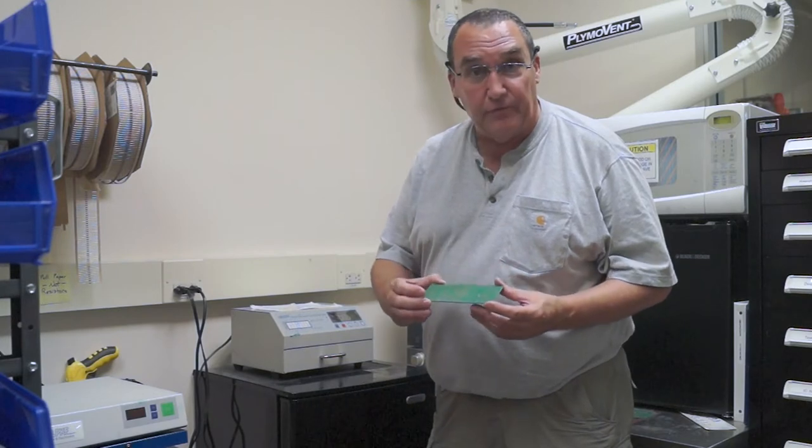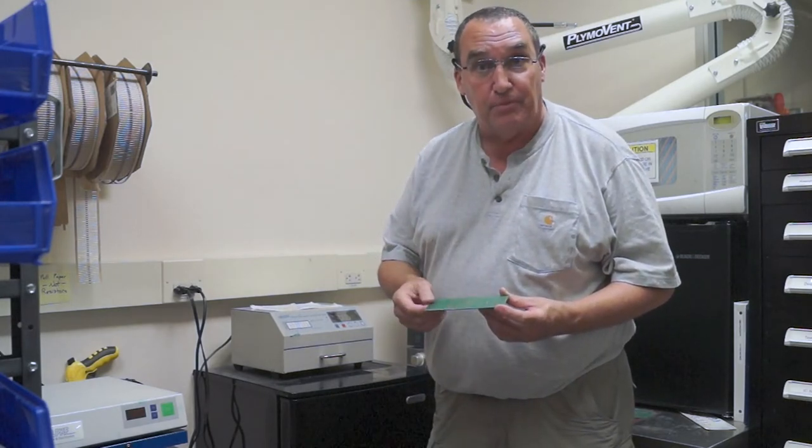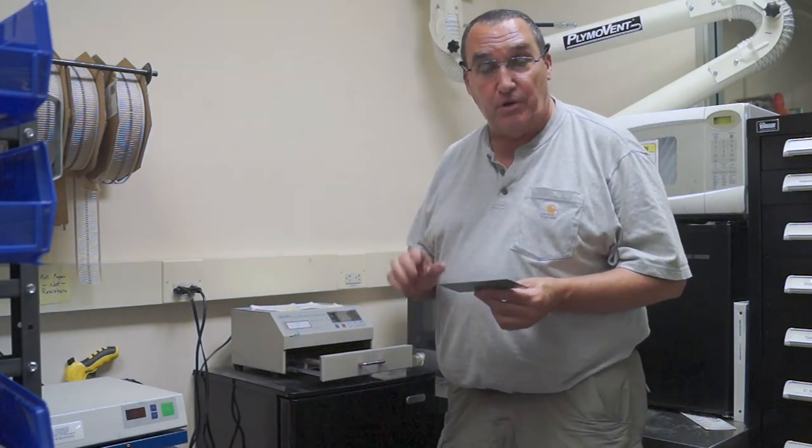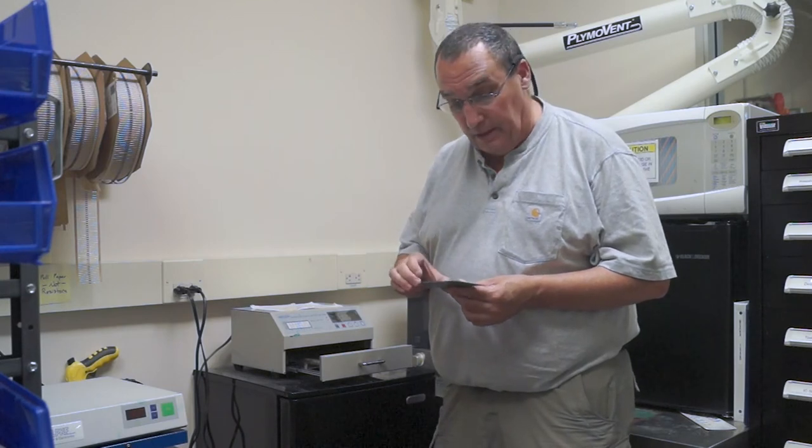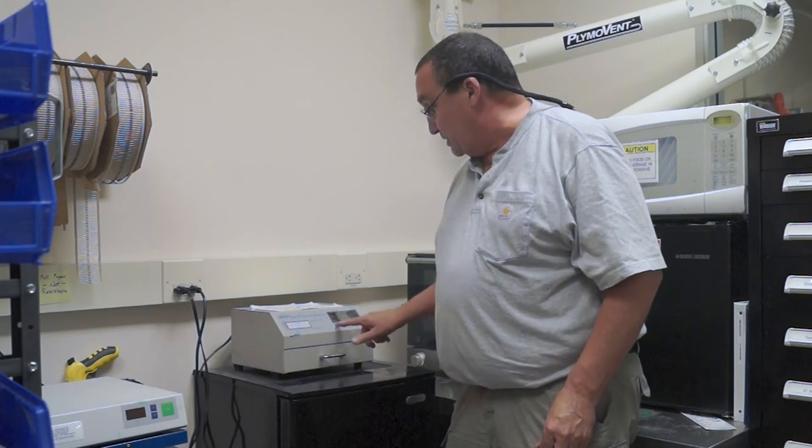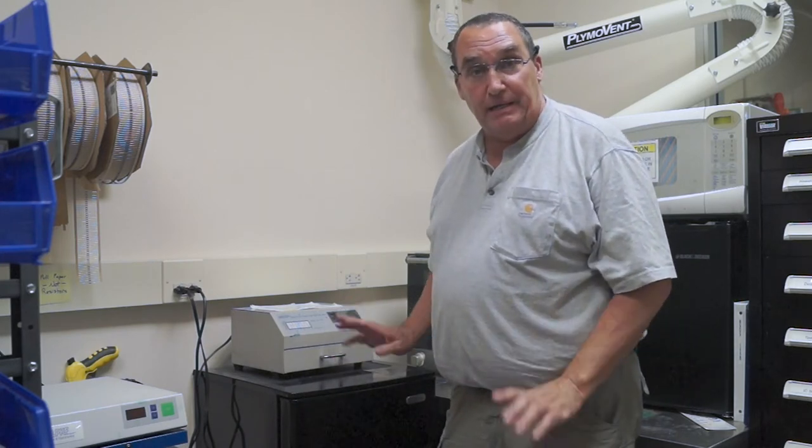Now that you've placed all your surface mount parts onto the board, you'll bring them into the reflow oven. It's already pre-programmed. You can set your board into the drawer, close the drawer and just hit run and it will automatically solder your board. It takes approximately 10 minutes to reflow solder your board and then you'll be able to come and take out your board and go to the next process of putting in through-hole parts.